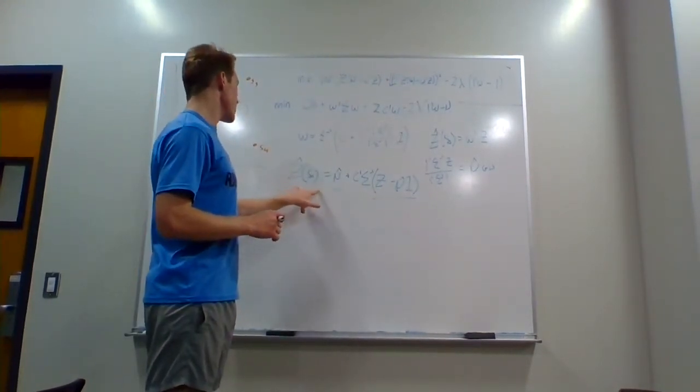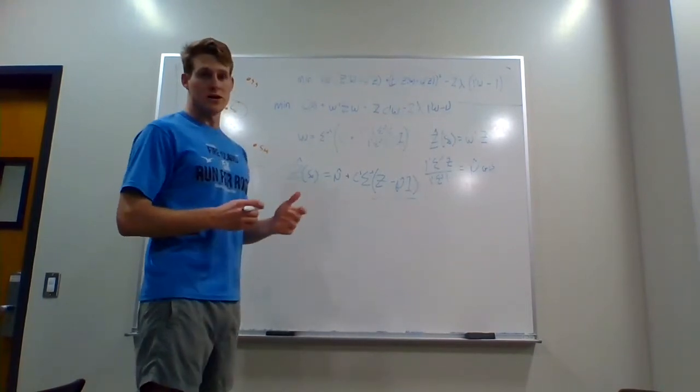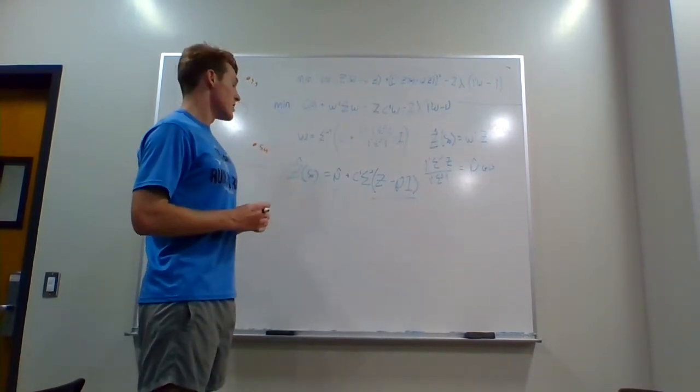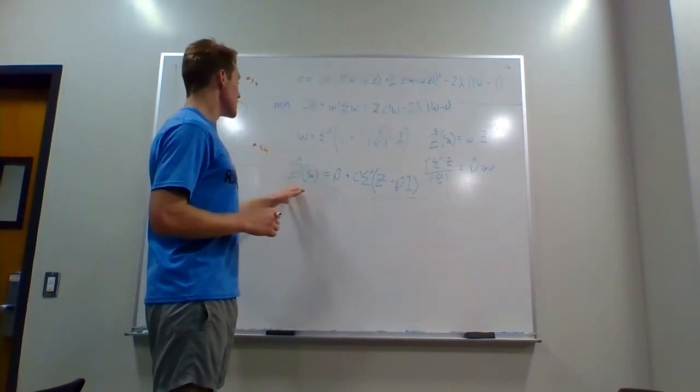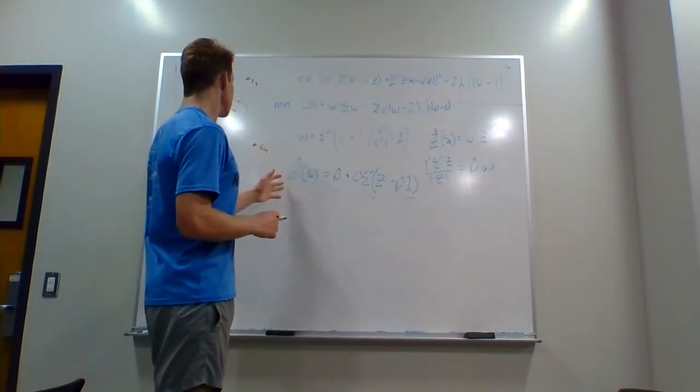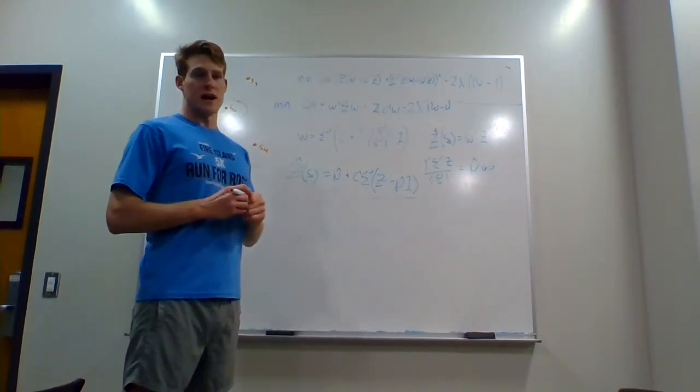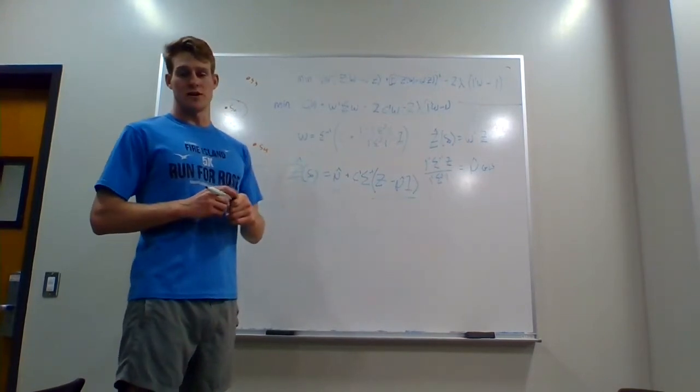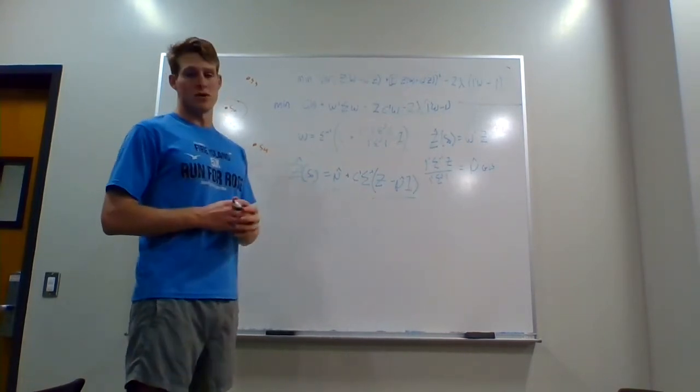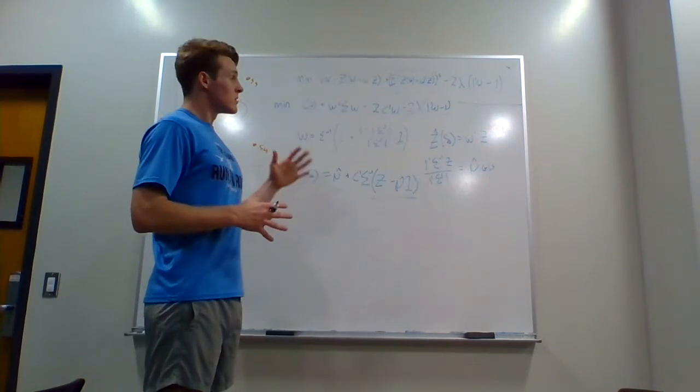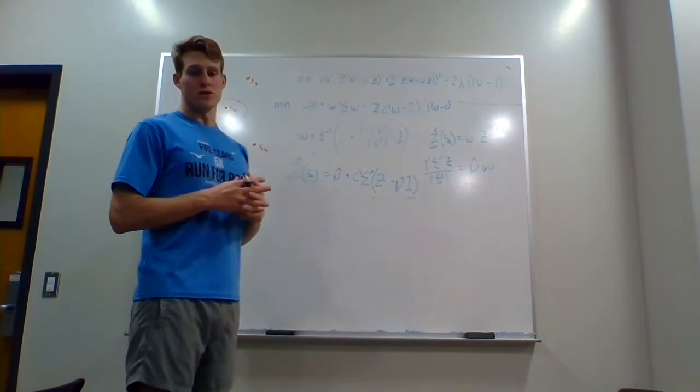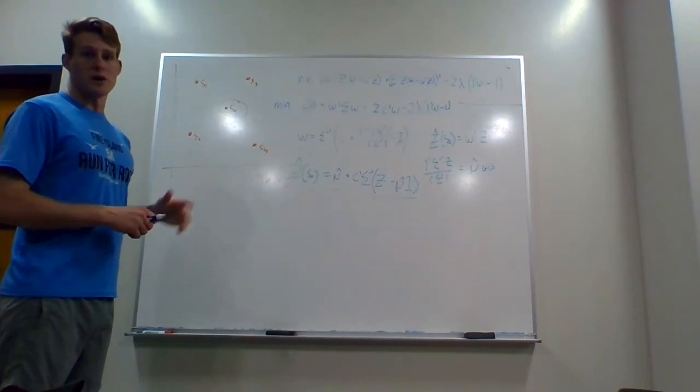And so this is going to be the final equation for our estimator, Z-hat of S-zero. And you can use this to then find the estimated value at location S-zero, and hopefully that will give you some more insight into the spatial relationship in a data set with X-Y coordinates.